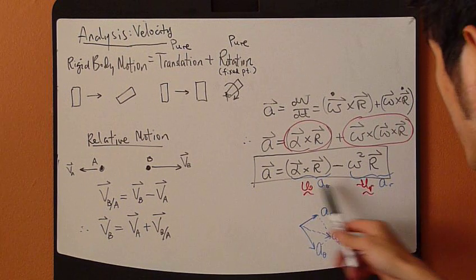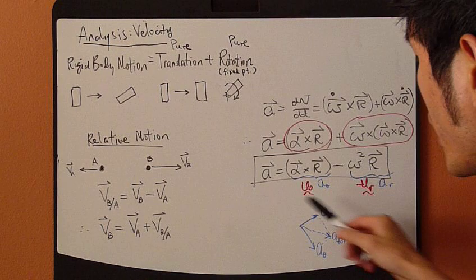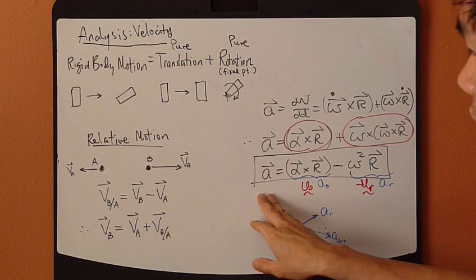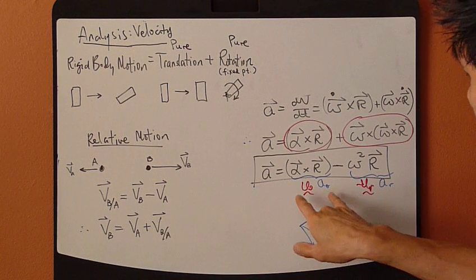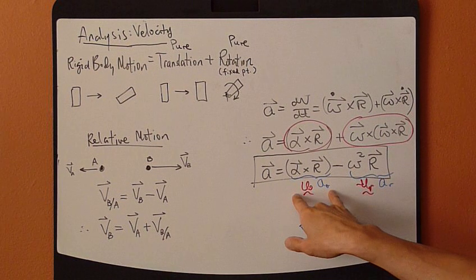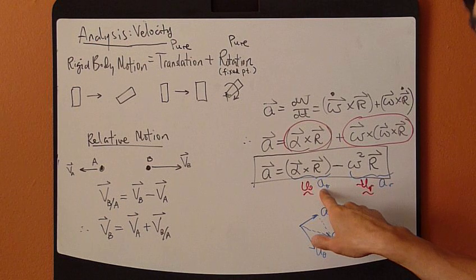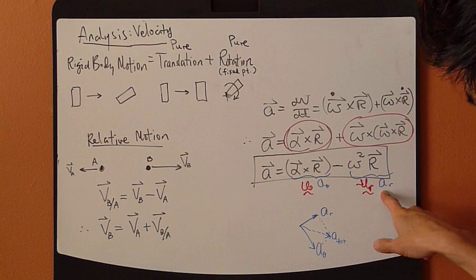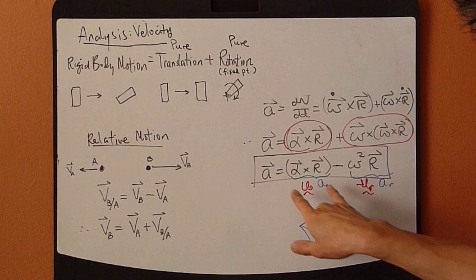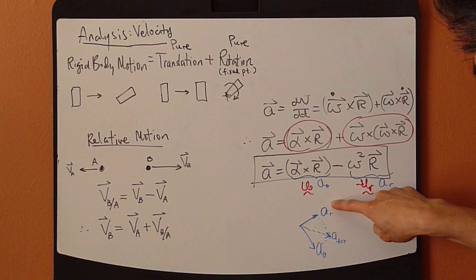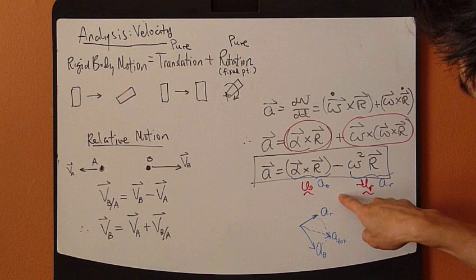This equation for acceleration for a rigid body rotating about a fixed point can be looked at as having two components: the angular component, theta, and the radial component. Graphically, you can draw it as ar and then a theta.